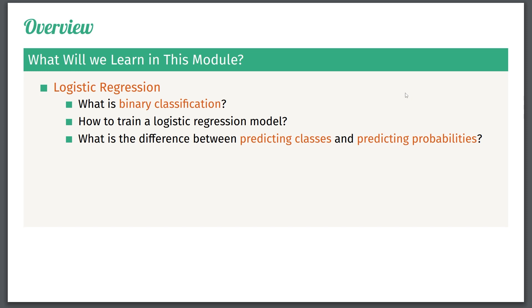Thirdly, we need to understand what's the difference between predicting classes and predicting probabilities. So in scikit-learn, we can both predict classes and probabilities when doing logistic regression, and we really need to understand the difference between these two things.